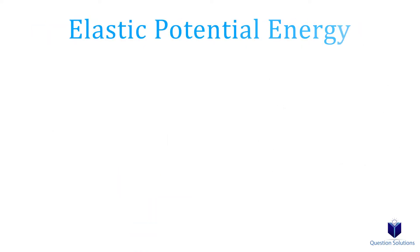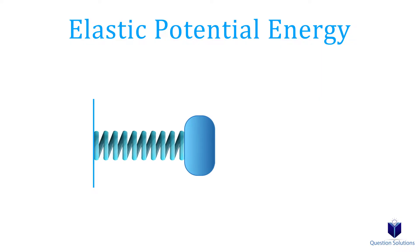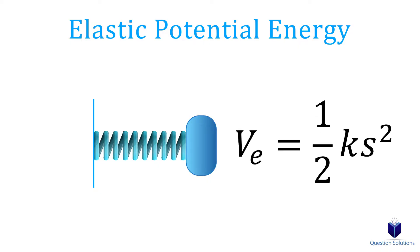Next we have elastic potential energy, and that occurs due to springs. If we have a spring with an object attached, when we compress or stretch it, we can figure out the potential energy using this equation: it's one half times the stiffness of the spring times the length of compression or extension squared.